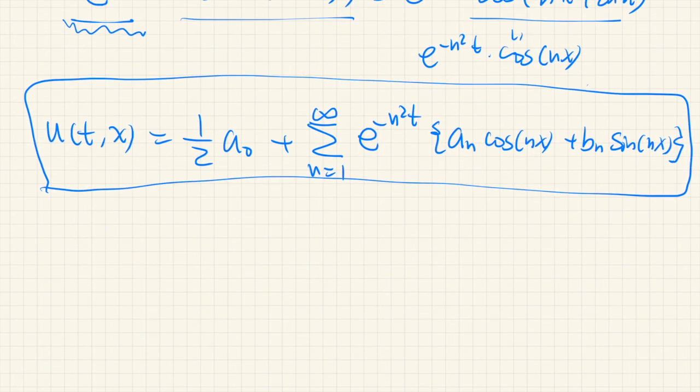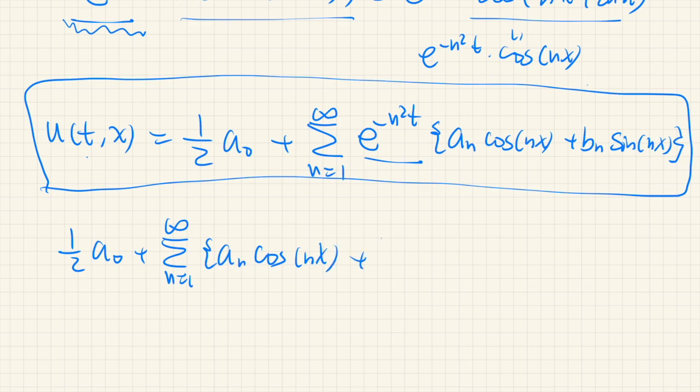So if we put t equal to 0, then we have this one. And this part will be just 1. And so it's a0 over 2 plus the sum from n equals 1 to infinity of an cosine nx plus bn sine nx equals to f of x.